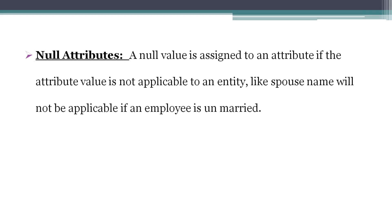Next one: Null Attribute. A null attribute means the attribute is not applicable for that entity. For example, consider employee as an entity with attributes Employee ID, Employee Name, Employee Department, Employee Salary. An attribute like spouse name may not be applicable for all employees.